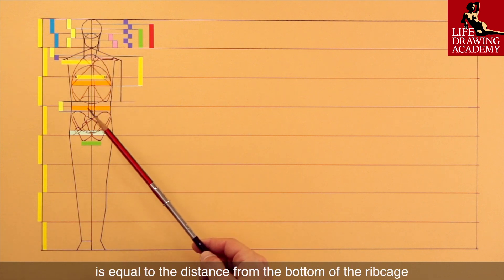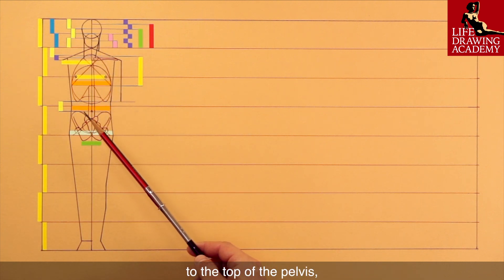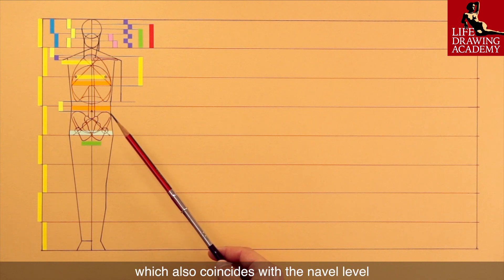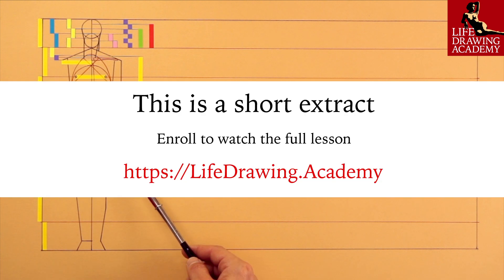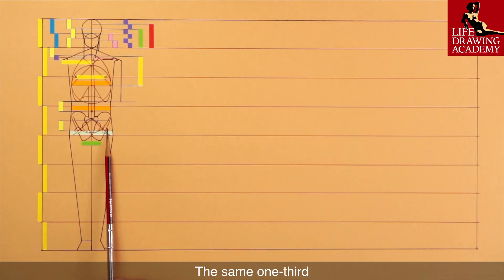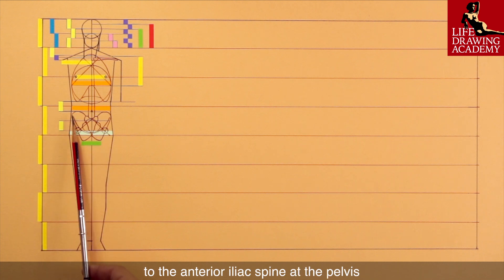One third of the head is equal to the distance from the bottom of the ribcage to the top of the pelvis, which also coincides with the navel level. The same one third is the distance from the hip joints level to the anterior iliac spine at the pelvis.